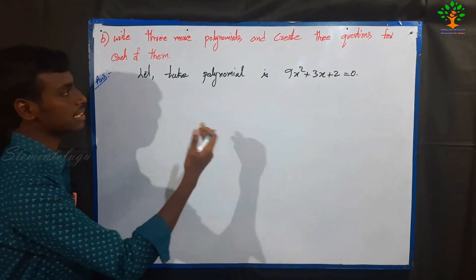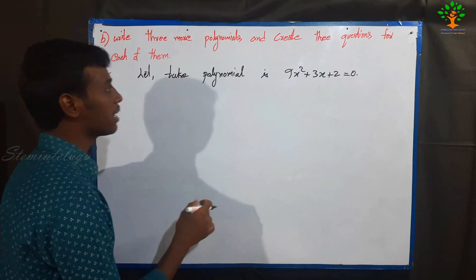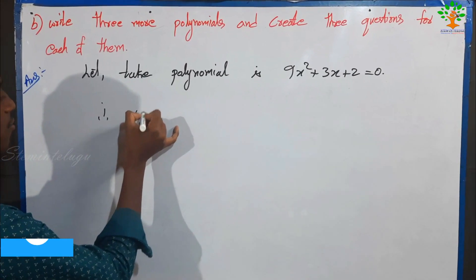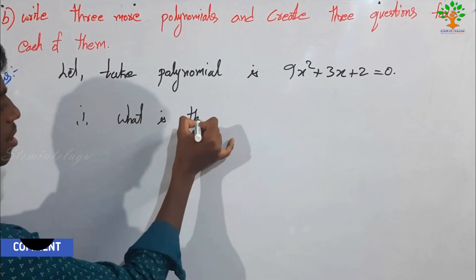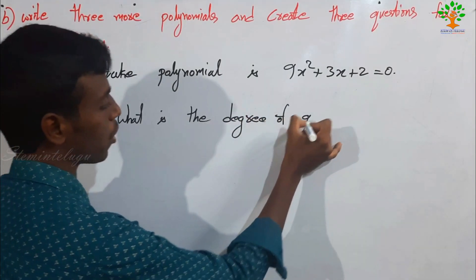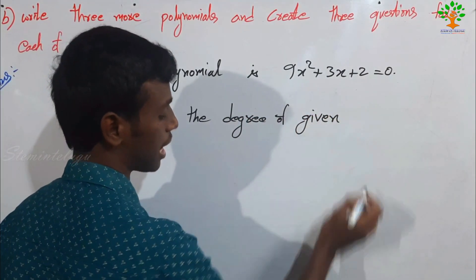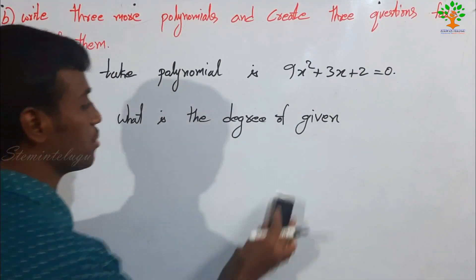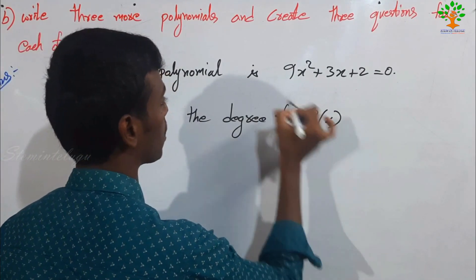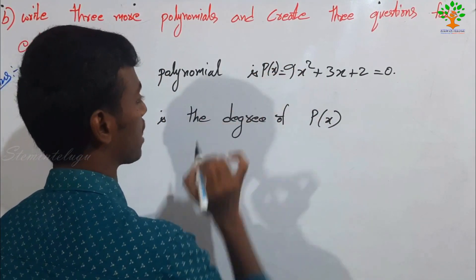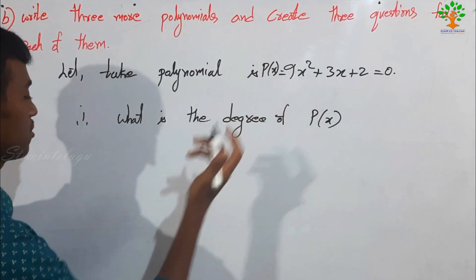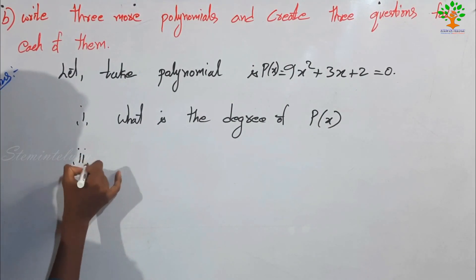Now you want to write three questions. First question: what is the degree of the given polynomial? For example, P of x is equal to 9x squared plus 3x plus 2 — what is the degree of P of x? Second question: what is the coefficient?